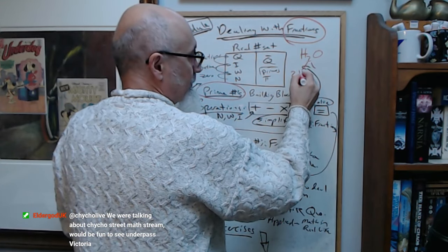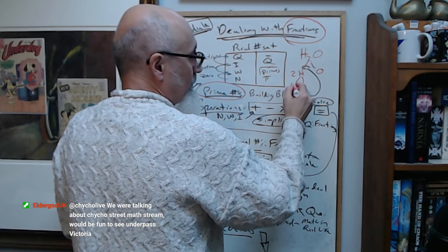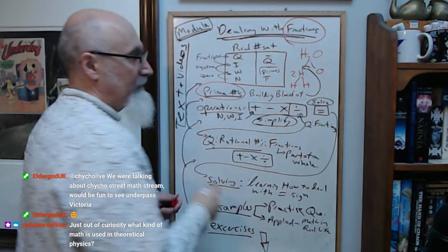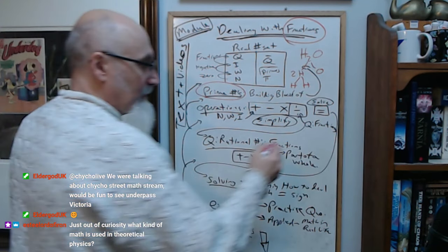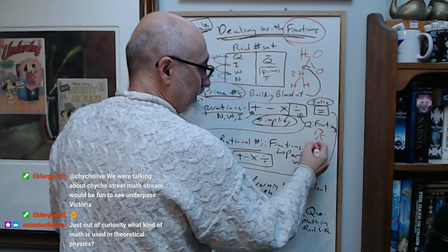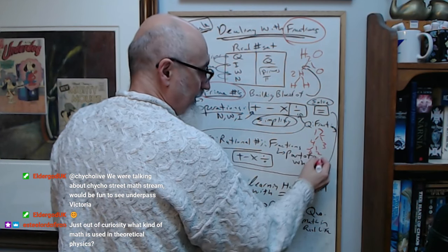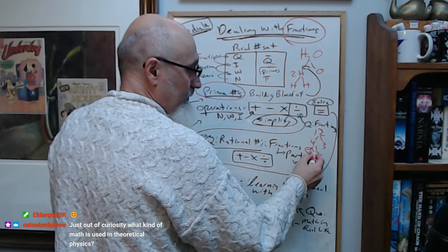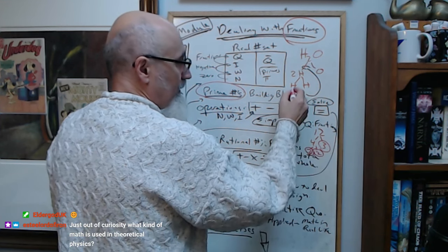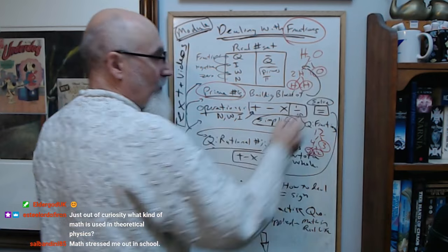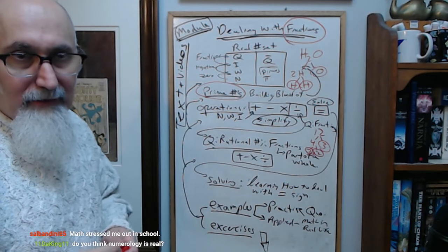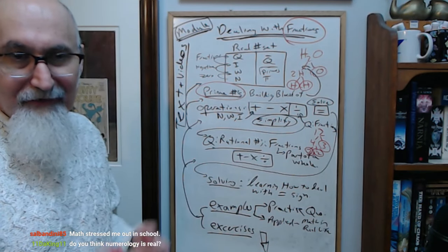Two hydrogens, an H and an H, right. The number 12 is 4 times 3, and 4 is 2 times 2. So 2, 2, 3. H, H, O. That's what prime numbers are - they're the elements of mathematics.